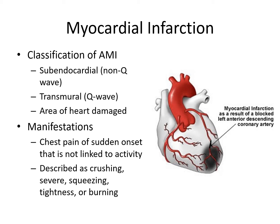Manifestations of acute MIs include pain of sudden onset not linked to activity, described as crushing, severe, squeezing, tightness, or burning. Pain often begins in the center of the chest and may radiate to other areas such as the shoulders, neck, jaw, or arms. Women and older adults often experience different symptoms than these.